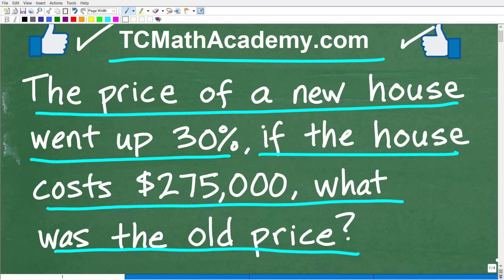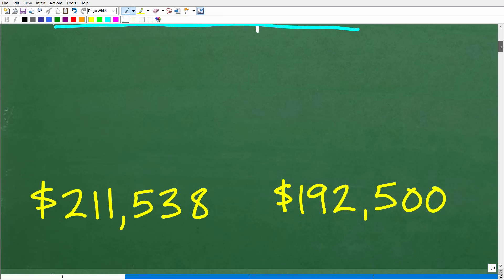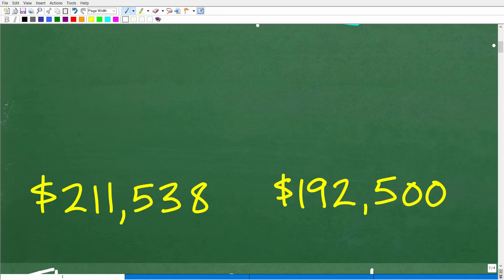So again, the price of a new house went up 30%, and of course this is not too unrealistic. Actually, 30% is not so bad because home prices, as you probably well know, have gone up tremendously over the last few years. But anyways, the price of this new house went up 30%. If the house now costs $275,000, what was the old price before this increase? Let's go ahead and take a look at the answer. So this, I believe, is going to be the two most common answers.